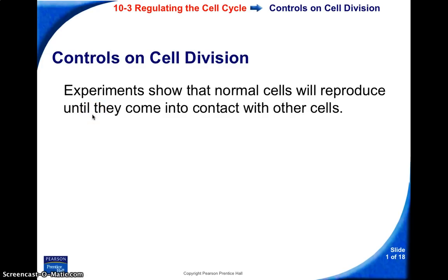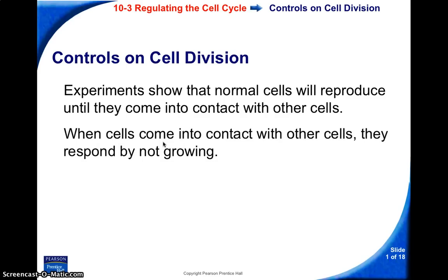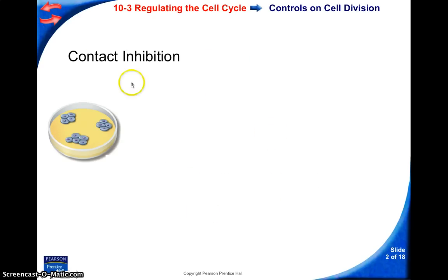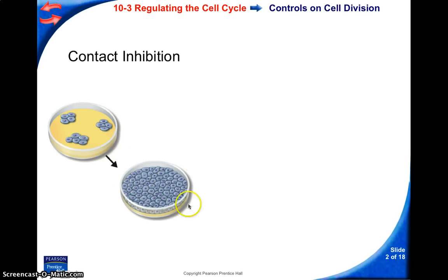Experiments show that typically cells will keep dividing until they come in contact with other cells. And what happens is that when they come in contact with other cells, they basically just stop growing. What that demonstrates is that we can turn on or turn off cell division. A great experiment here is: let's say we have three colonies of cells, and over time they're going to fill in the rest of this Petri dish. Once they do, the cells are going to stop growing.